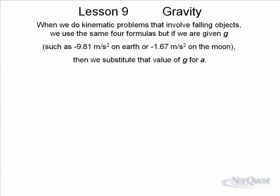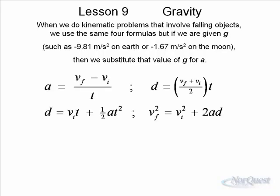When we do kinematic problems that involve falling objects, the same four formulas come up, but we are given g, and we substitute that value of g for a in these kinematic expressions. On Earth it would be 9.81. On the Moon, we know that the acceleration of gravity is only 1.67 meters per second squared. That's why they have to move around differently, they do the hopping thing. Notice in the second one there is no value of a, and we use negative because negative indicates a downward direction.